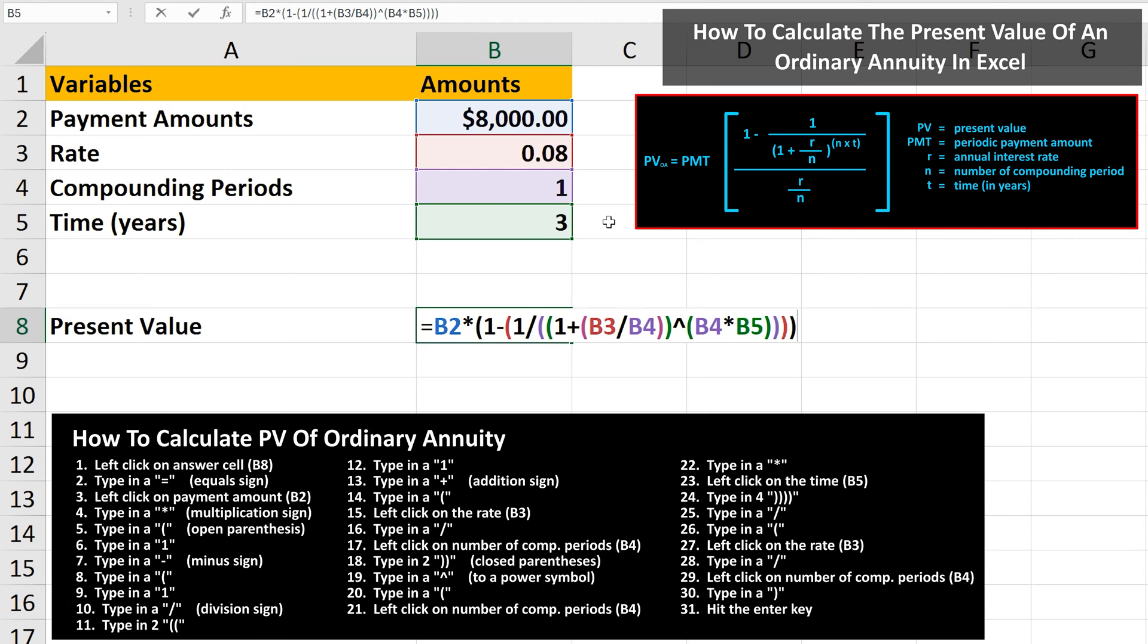And then we type in four closed parenthesis. From here, we type in a division sign, followed by an open parenthesis. Next, we left click on the rate, cell B3. Then type in another division sign. Next, we left click on the number of compounding periods, cell B4. And then we type in a closed parenthesis to close off the function.